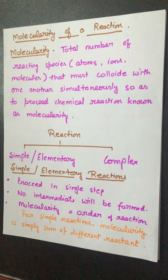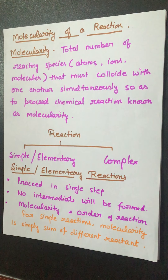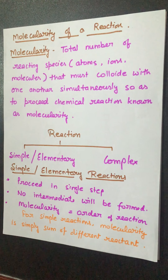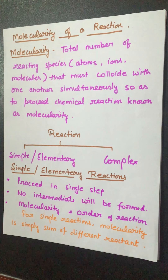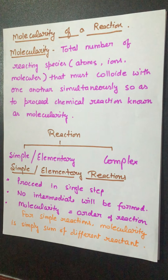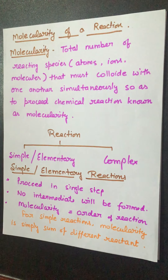Now we talk about the next topic of the chapter chemical kinetics: molecularity of reaction. Before talking about molecularity, let's recall our last topics — law of mass action, rate law expression (RLE), and order of reaction. In the law of mass action, rate depended on stoichiometric coefficients as a theoretical value, while in RLE it was experimental and rate does not depend on stoichiometric coefficients. From RLE we can also find the order of reaction.